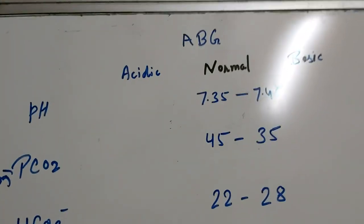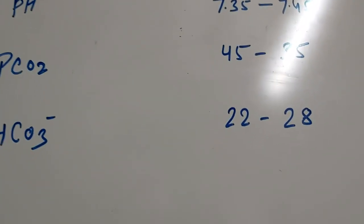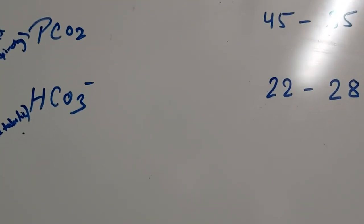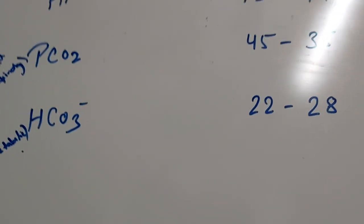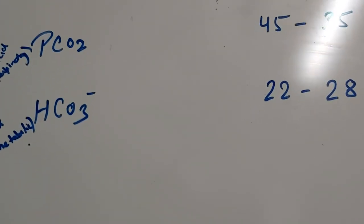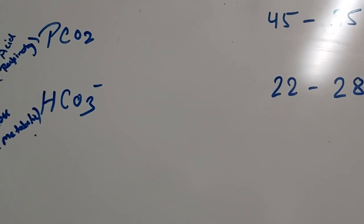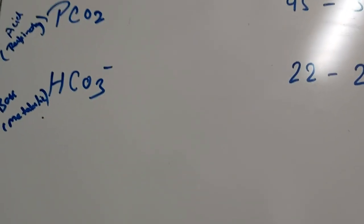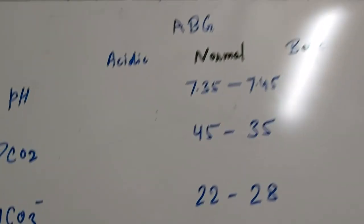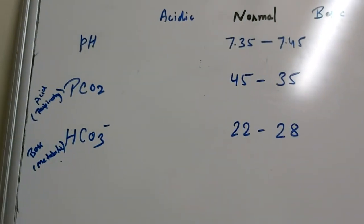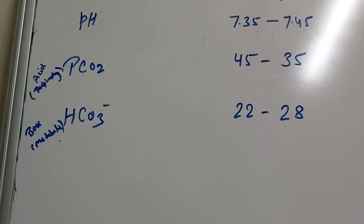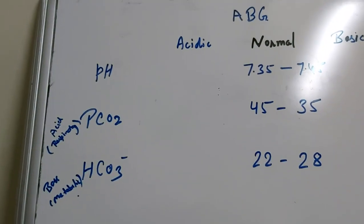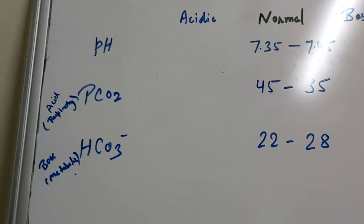So let's take an example. I am going to tell you, suppose we are taking an example where the pH is acidic, and which is due to the respiratory factor, that is, PCO2 is also increased. So in that case, the alkali must increase. But if the alkali is not able to increase that much amount so as to bring the pH to the normal level, then it is known as uncompensated.